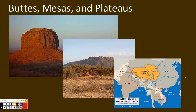The first set of landforms are created by wind weathering and erosion. The first three are buttes, mesas, and plateaus. Buttes are formed when a hill is shaped by wind, weathering, and erosion.